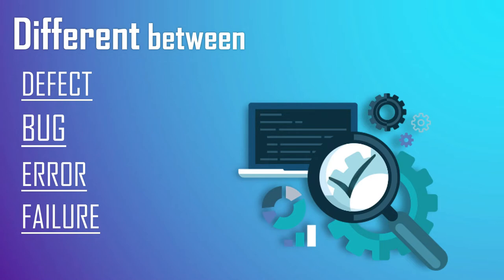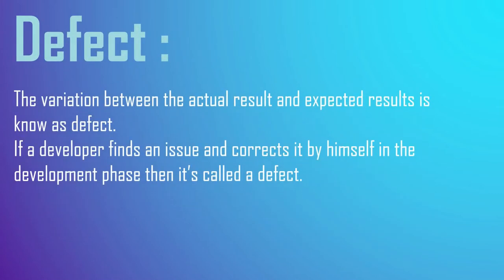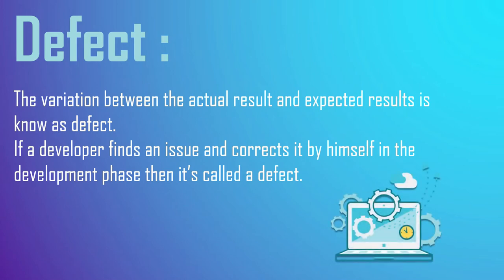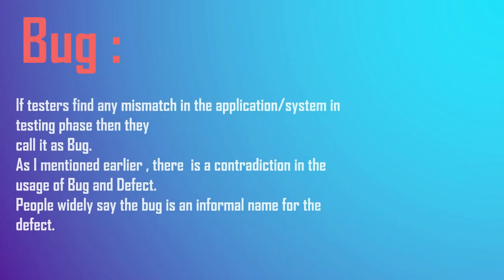Both defect and bug are problems in the application, but it depends on which phase of the SDLC they were found. What is a defect? The variation between the actual results and expected results is known as a defect. If the development team finds the problem and fixes it themselves in the development phase, it is called a defect.